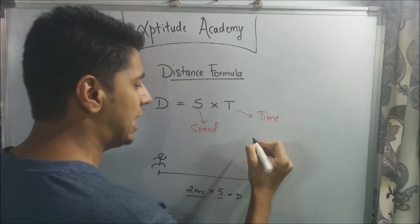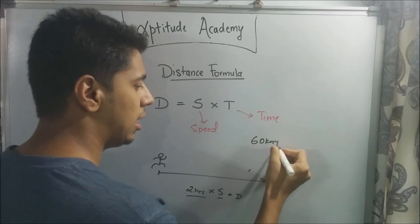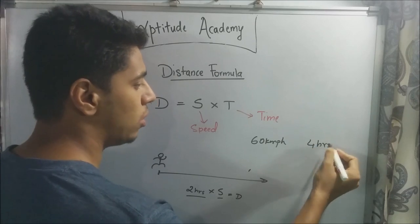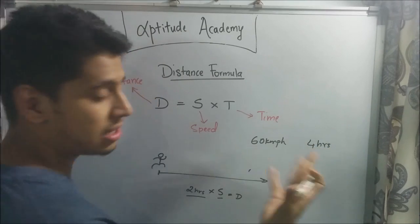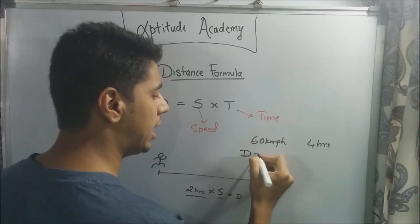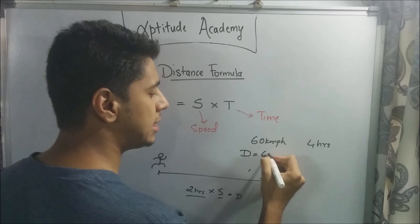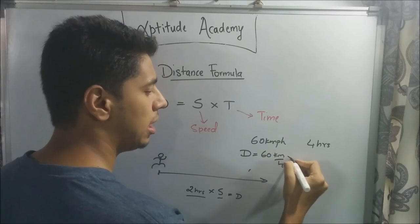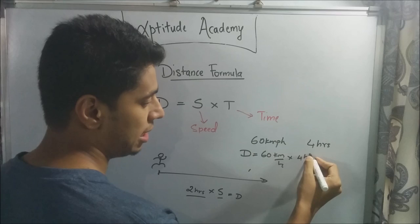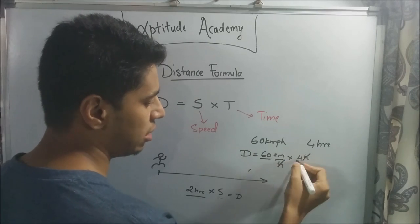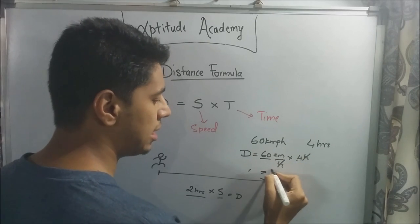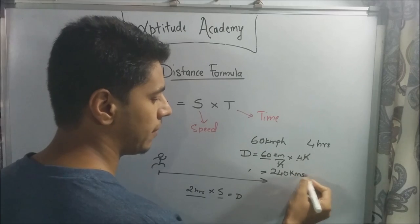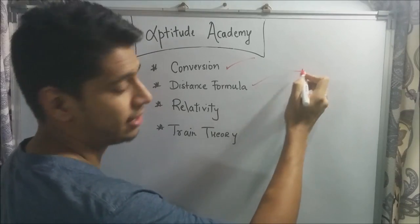Similarly, if you're riding a bike at 60 kilometers per hour for four hours, to find the distance covered, just multiply: 60 km/h × 4 hours. The hours cancel out, giving you 60 × 4 = 240 kilometers. Distance formula: check.